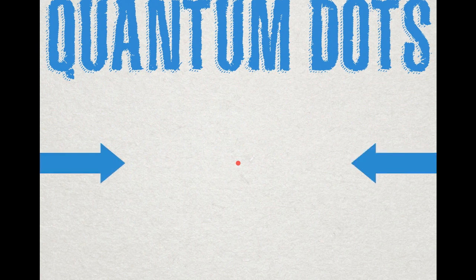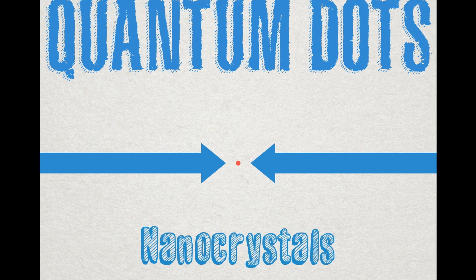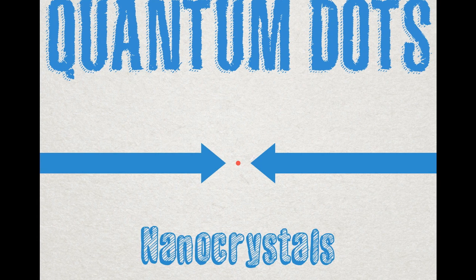Quantum dots are tiny semiconductor crystals. This means that these particles can either conduct or resist electricity depending upon the temperature and maturity of the semiconductor.